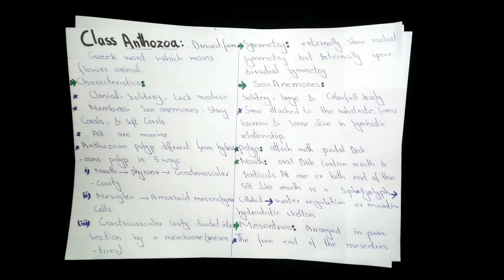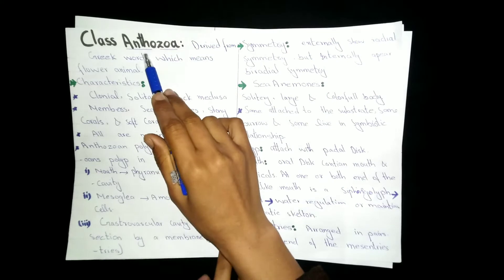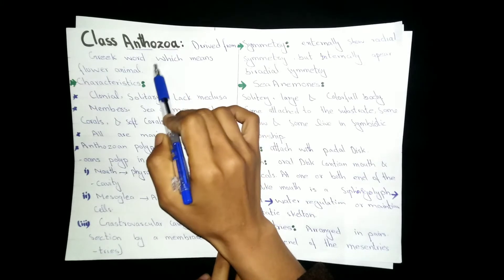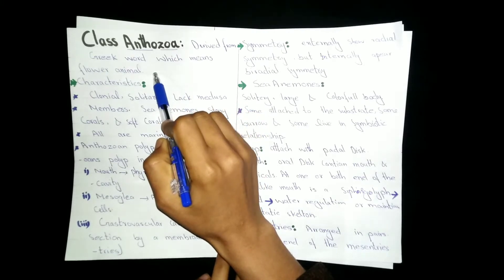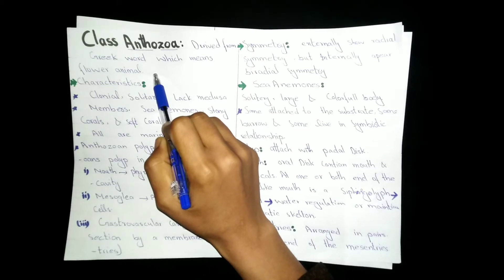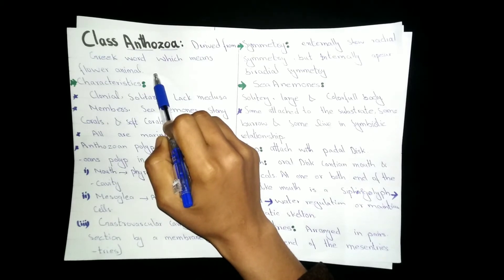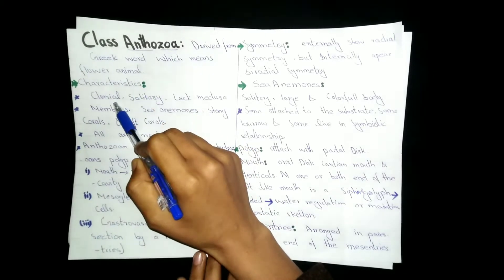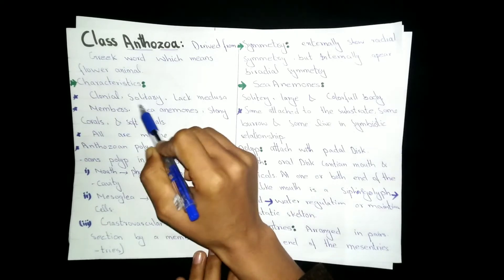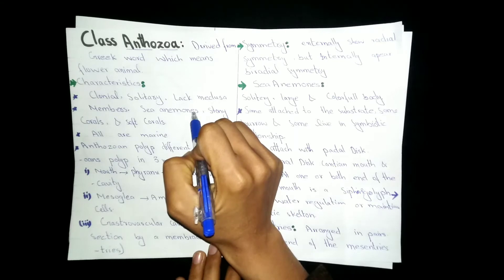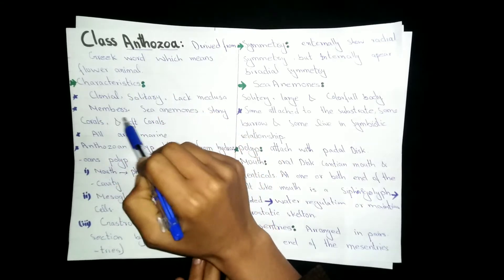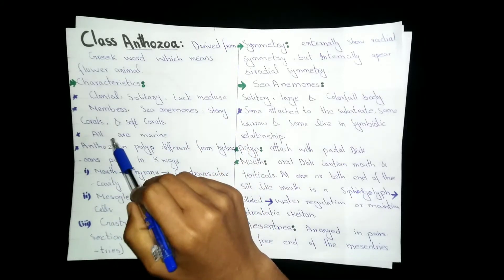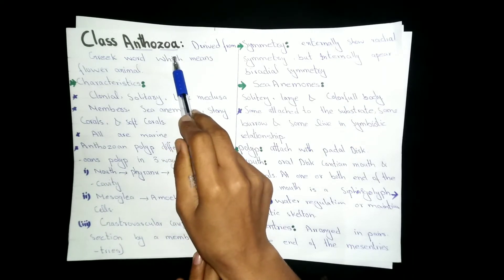Welcome students. Today's discussion topic is class Anthozoa. Anthozoa is a Greek word — 'Anthos' means flower and 'zoa' means animals, so it means flower animals. This class includes sea anemones, stony corals, and soft corals. All species of this class are marine.